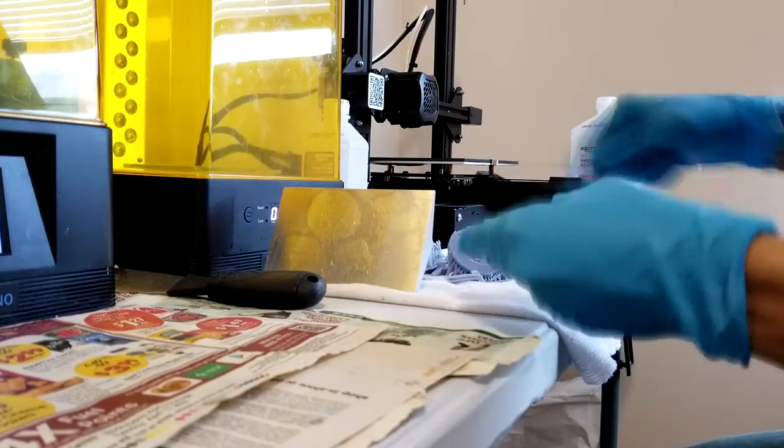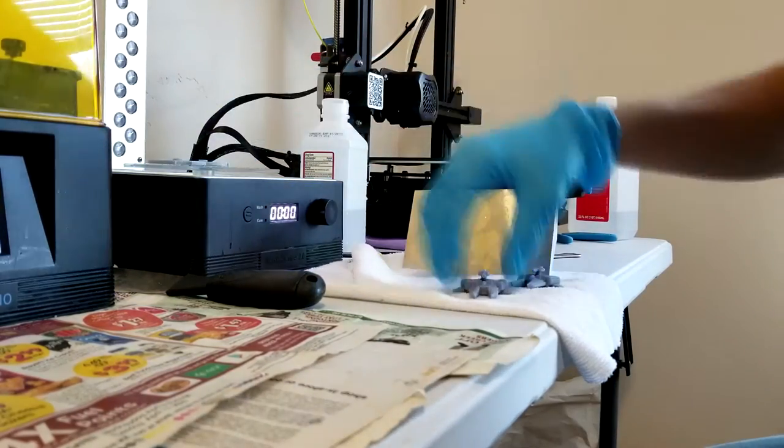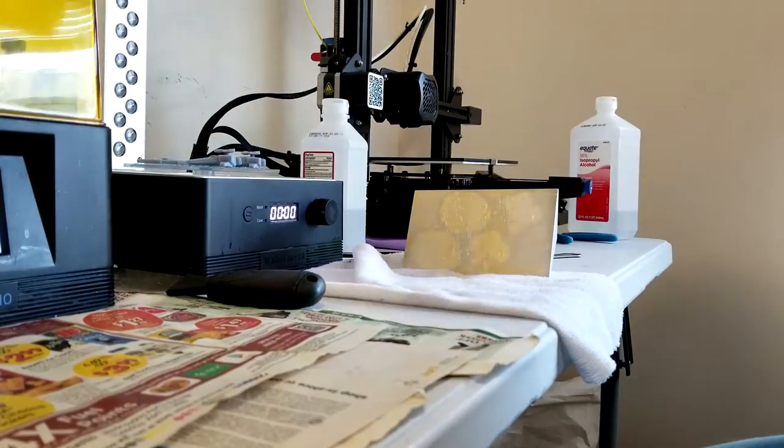Now I'm just going to get the residual supports off with a toothbrush and we're going to finish the curing process. Usually you don't fully cure the model as you print. So while they're curing, I'm just going to clean the build plate just to make sure there's no residual resin.